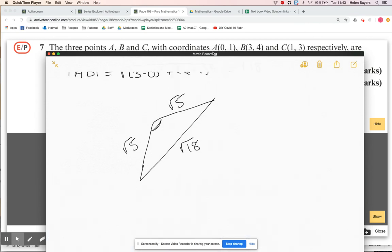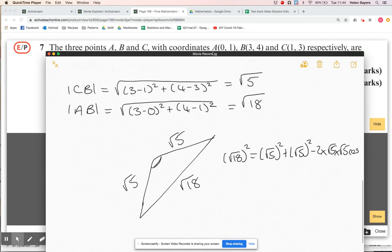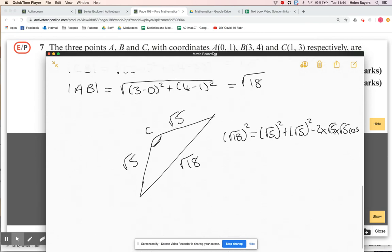So cosine rule, I'm going to say root 18 all squared is root five squared plus root five squared minus two times root five times root five times cos C.